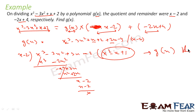So g(x) = x² − x + 1. That's our answer. To summarize what we did: we were told that when x³ − 3x² + x + 2 is divided by g(x), you get (x − 2) as quotient and (−2x + 4) as remainder. We rearranged to find g(x), divided, and got x² − x + 1.